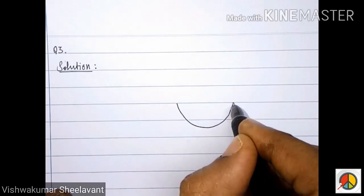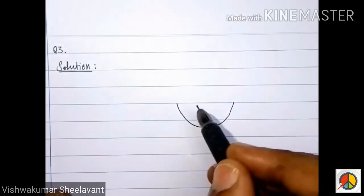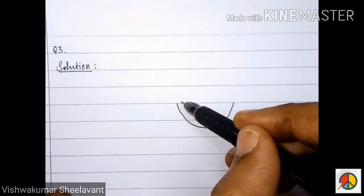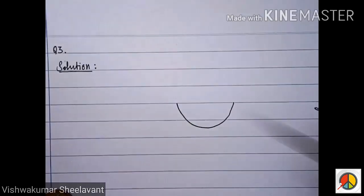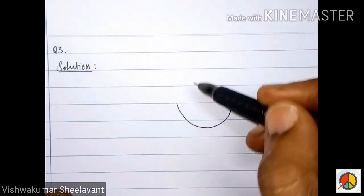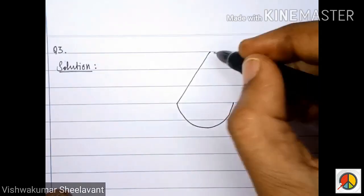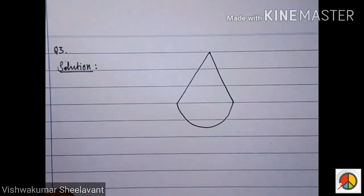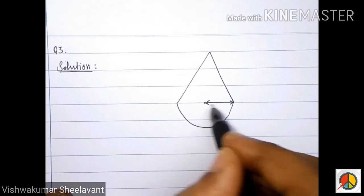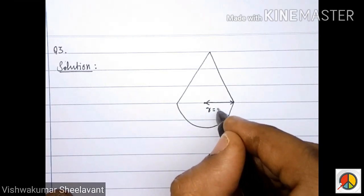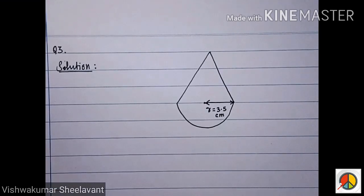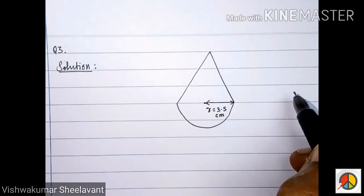There is a hemisphere and on this hemisphere a cone is mounted. The radius of the hemisphere and the radius of the base of the cone are both 3.5 cm. The radius R is 3.5 cm, and the total height of the toy is 15.5 cm.